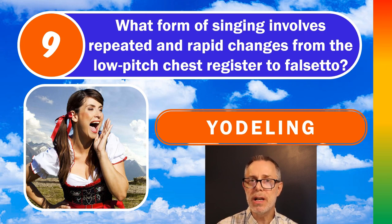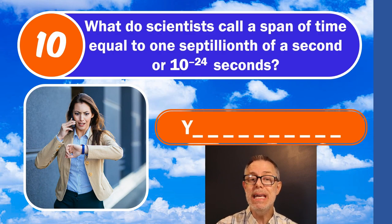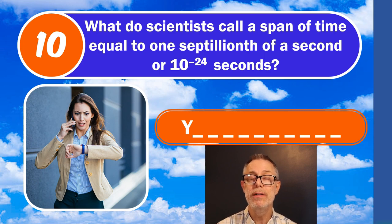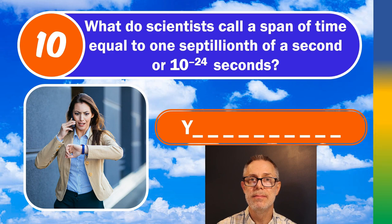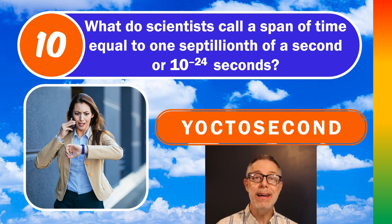We are moving on to question number ten, followed by a bonus question. I've also got more information for you about this new channel, Quizzit. Question number ten: what do scientists call a span of time equal to one septillionth of a second — that is a trillion trillions, or 10 to the negative 24 seconds? The answer is Yoctosecond. I'll admit before I made this quiz I had never heard of the term Yoctosecond. The whole idea of Quizzit is to learn something new and have some fun along the way.